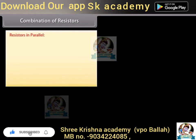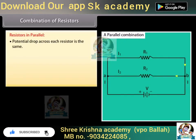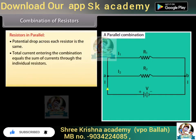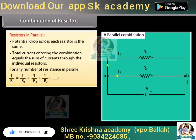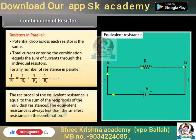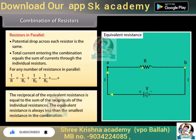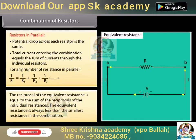Resistors in parallel: the potential drop across each resistor is the same; the total current entering the combination equals the sum of currents through individual resistors. For resistors in parallel: 1/R = 1/R1 + 1/R2 + 1/R3 + ... The reciprocal of the equivalent resistance equals the sum of reciprocals of individual resistances. The equivalent resistance is always less than the smallest resistance in the combination.